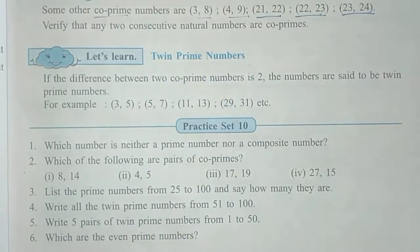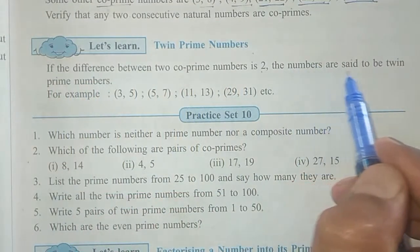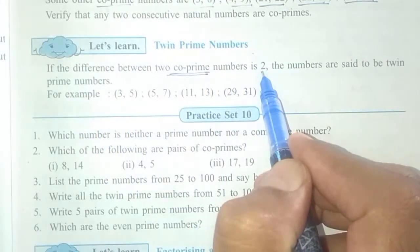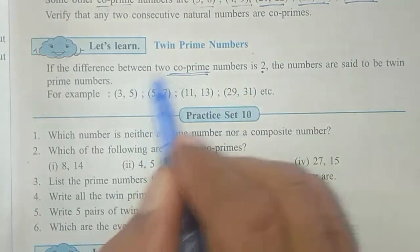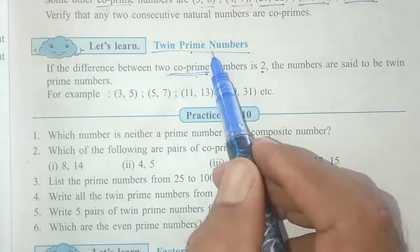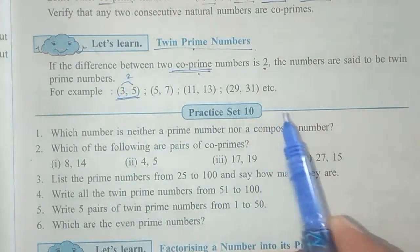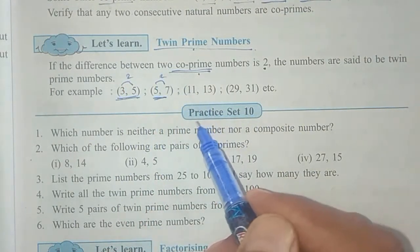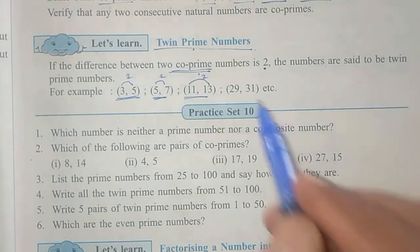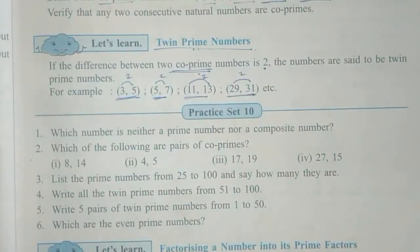Now let us see twin prime numbers. If the difference between two co-prime numbers is two, the numbers are said to be twin prime numbers. Take co-prime numbers where the difference is 2 — those are called twin prime numbers. Twin prime numbers are the next step from co-prime numbers. Example: 3 and 5 — these two are co-prime numbers and their difference is 2 (3 + 2 = 5), so they are twin prime numbers. Similarly, another pair of co-primes with difference 2 are also twin prime numbers.